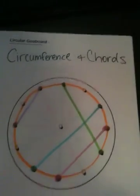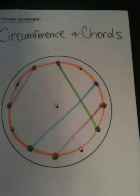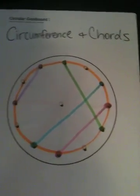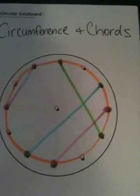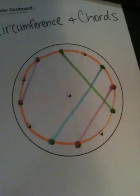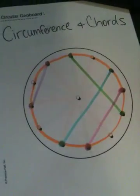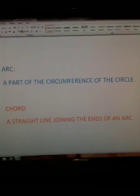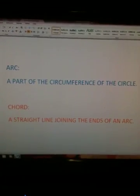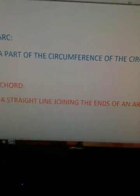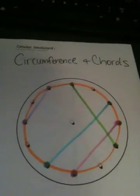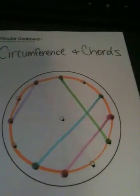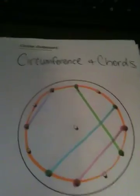A few different things I have represented here using circular geoboards. Here is one that represents circumference and cords. And just for anybody that needs to brush up on their math, an arc is a part of the circumference of the circle, and a cord is a straight line joining the ends of an arc. So the different colors represent different kinds of cords, as well as the orange is the circumference.